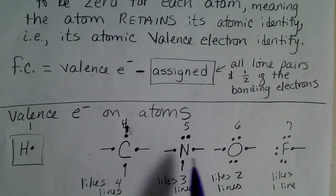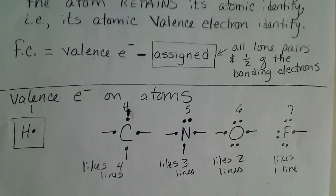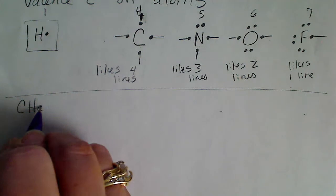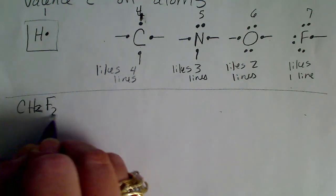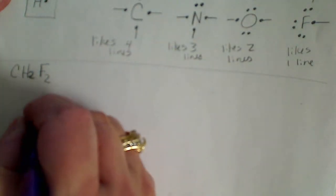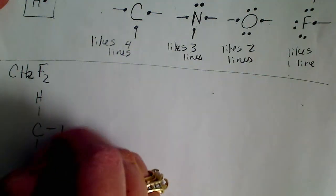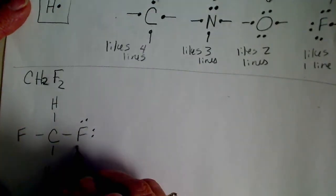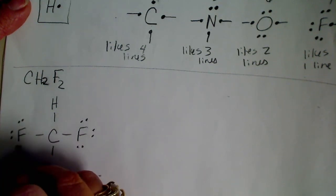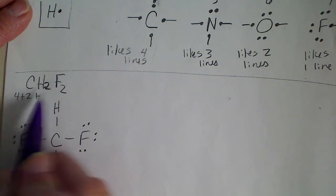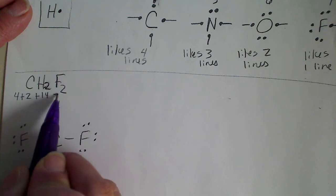When an atom is in a molecule, it still likes to retain its atomic identity. We're going to look at difluoromethane (CH2F2). Using the needed-available-shared method, we get four lines with carbon in the middle. Here's the first dot structure: fluorines on two sides of carbon, hydrogens on the other two sides, and each fluorine has two lone pairs. That gives us four electrons from carbon, plus two from each hydrogen, plus fourteen from the two fluorines.